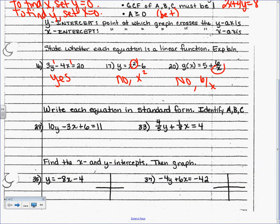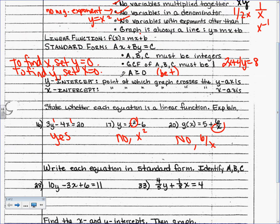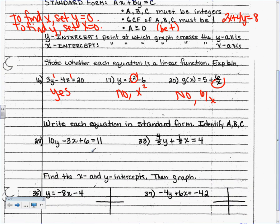Write each equation in standard form and identify A, B, and C. Standard form is Ax + By = C. I need x and y on the left-hand side with the constant on the right. Right now, this 6 is in the way — subtract 6 from both sides. So we get negative 3x + 10y = 5.